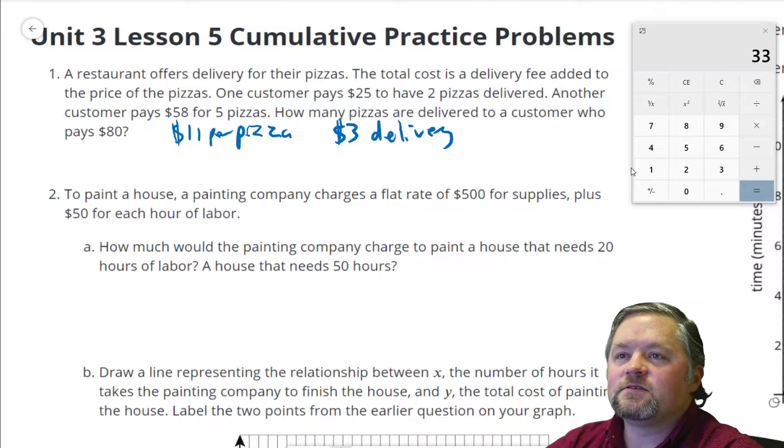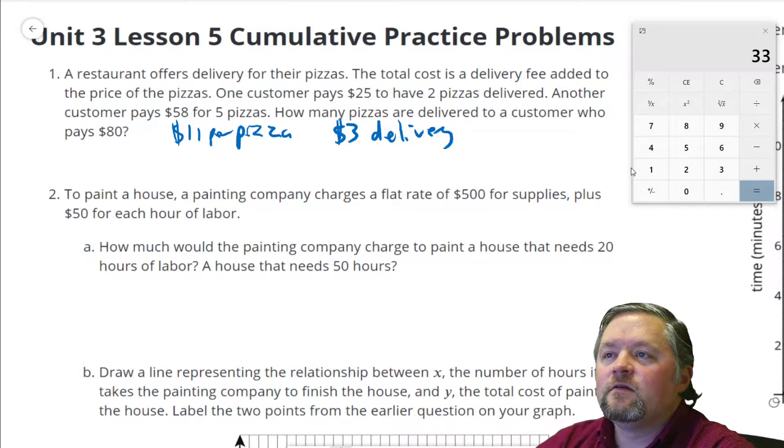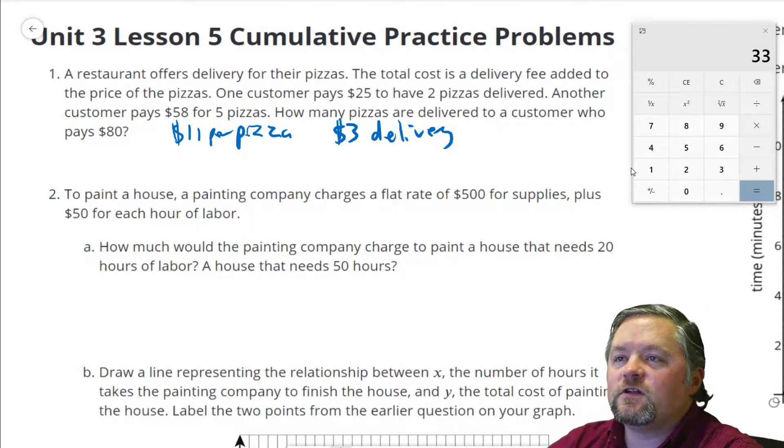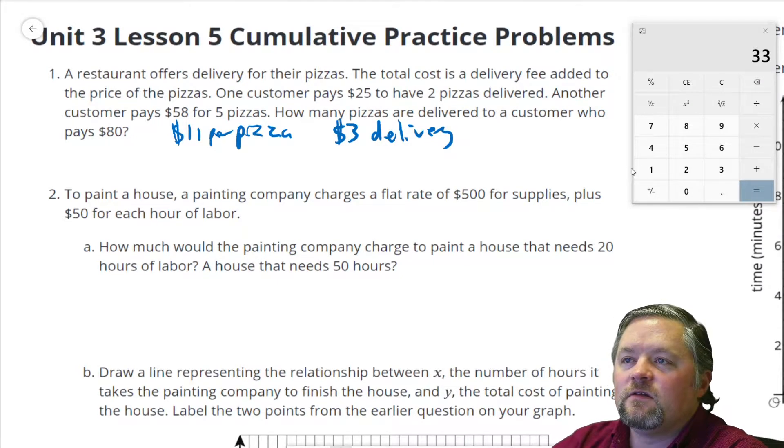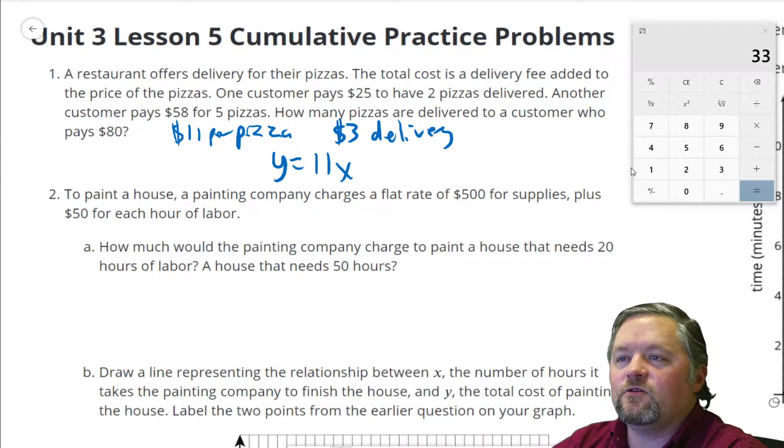That means if we're paying $3 for delivery, let's see if we can quickly write an equation for this. Because when in doubt, make an equation. Y equals 11x, because that's our per pizza. Per means that's our unit rate, our multiplier, plus the delivery fee, plus $3.